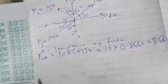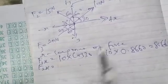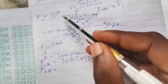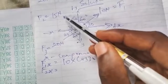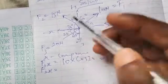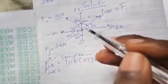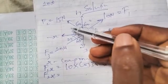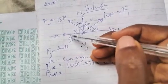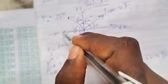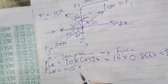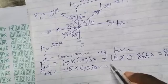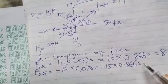Next is F2x. Hold the tip of the arrow of F2 and drag it until it meets the x-line. Notice the direction of the arrow — it points towards the left, making it a negative component in the x-direction. It passes through 30 degrees, so F2x = −15 × cos 30° = −15 × 0.866 = −12.99 Newtons.